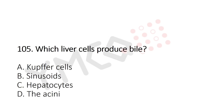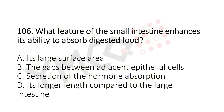Now let's move to Question 105: Which liver cells produce bile? Option A: Kupffer cells, Option B: sinusoids, Option C: hepatocytes, Option D: none. The answer is Option C: hepatocytes. Now Question 106: What feature of the small intestine enhances its ability to absorb digested food? Option A: its large surface area, Option B: the gaps between adjacent epithelial cells, Option C: secretion of hormones for absorption, Option D: its longer length compared to the large intestine.